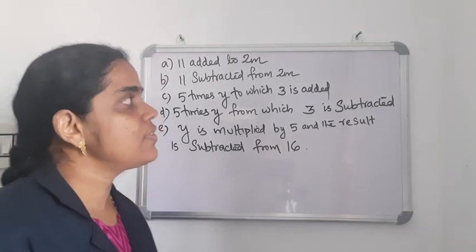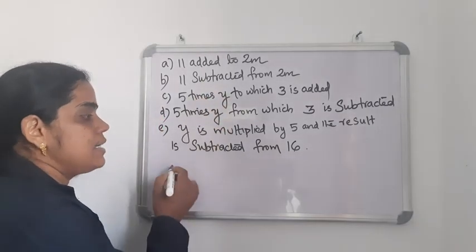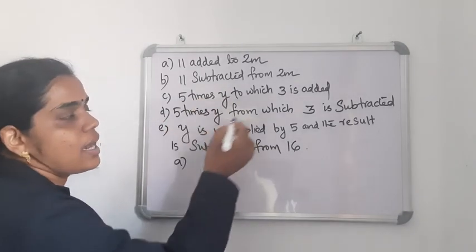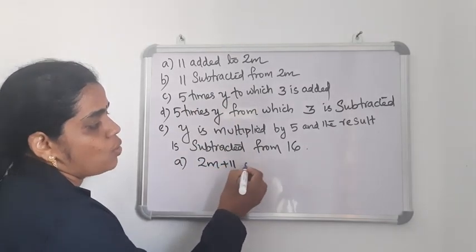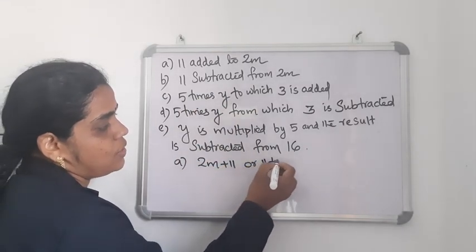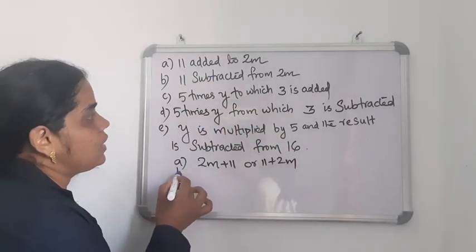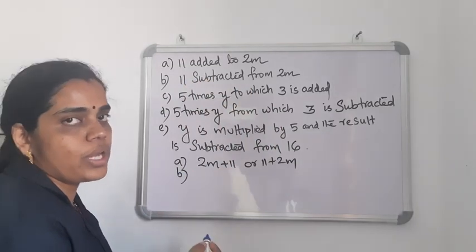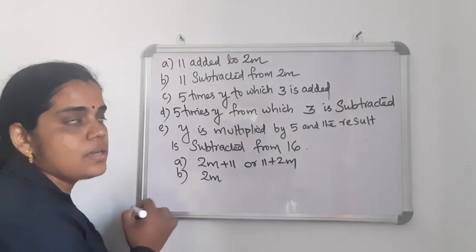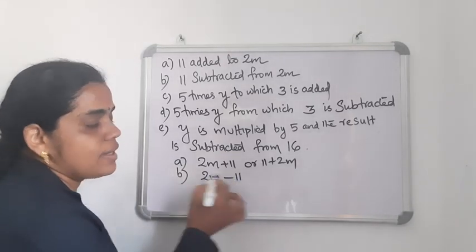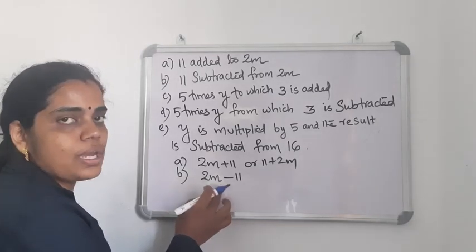Some more expressions: 11 added to 2N — that is addition, so you can write 2N plus 11 or 11 plus 2N — both are correct. Then: 11 subtracted from 2N — from 2N you write 2N first, then subtract 11. So the expression is 2N minus 11.